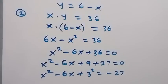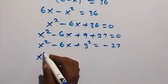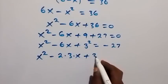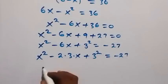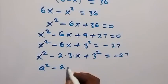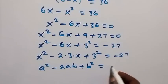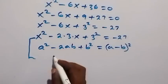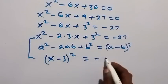And then from here, we can equally write this as x squared minus 2 times 3 times x then plus 3 squared, then equals to minus 27. And this side follows when we have a squared minus 2ab plus b squared, which can be written as a minus b, all squared.